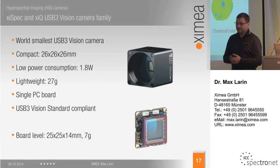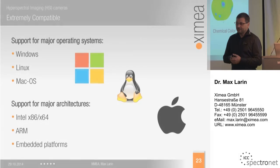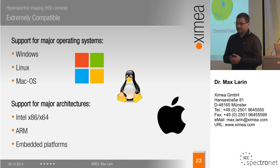Here is how our hyperspectral camera looks. It is really tiny — one cubic inch overall dimensions, weighing less than 30 grams and consuming less than 1.8 watts. You can put it into any compact device, whether flying or moving, and get hyperspectral data from places where you could hardly bring a regular hyperspectral imaging device. The cameras support all reasonable operating systems, as well as different processor architectures and embedded platforms.